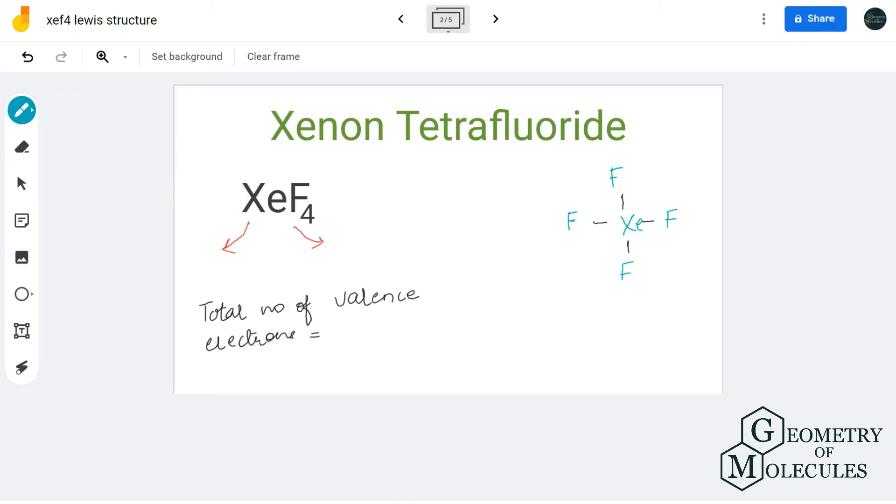Xenon has 8 valence electrons in its outer shell, whereas fluorine has 7 valence electrons. As there are 4 fluorine atoms, we'll multiply this number by 4, giving us 28 valence electrons. Adding both numbers, we get 36 valence electrons for xenon tetrafluoride.